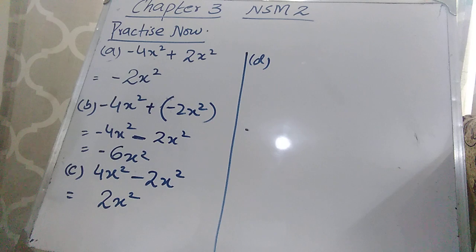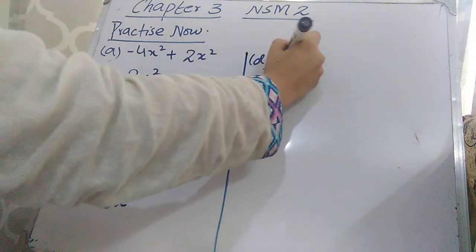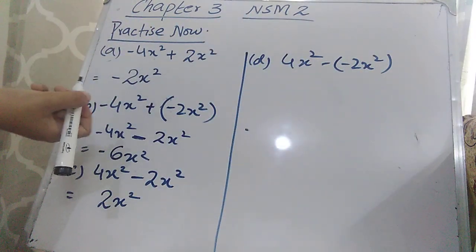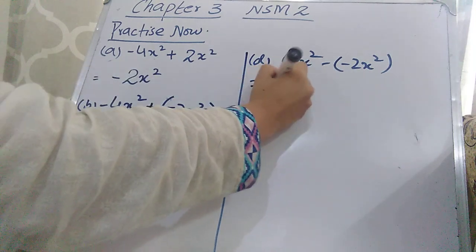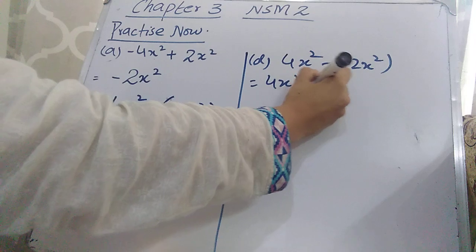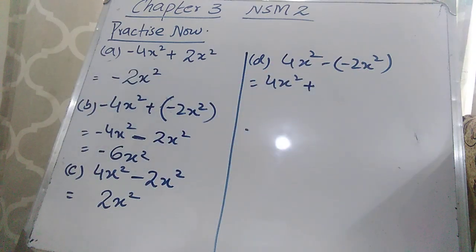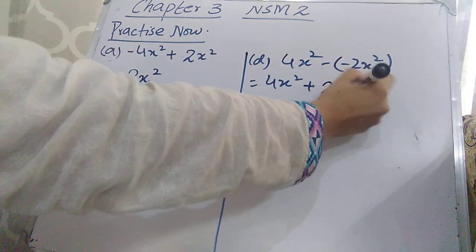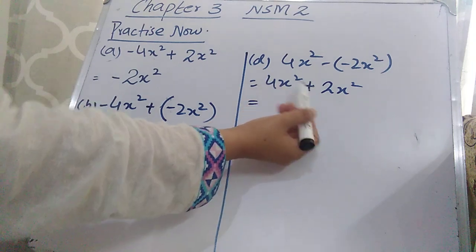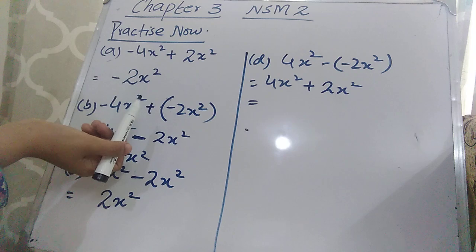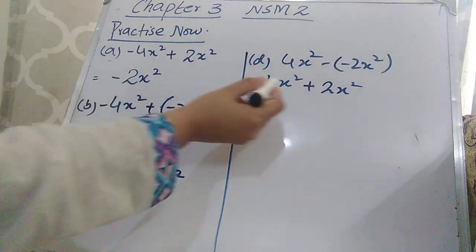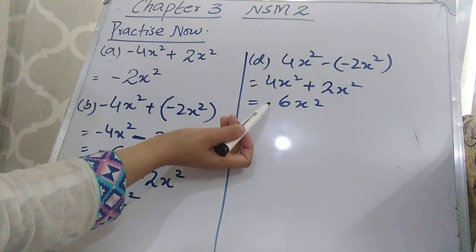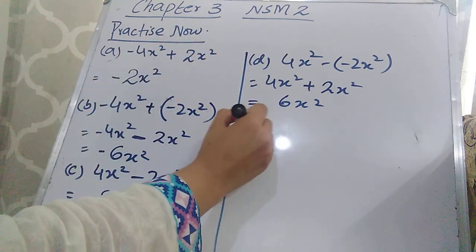For part (d): 4x² − (−2x²). Two signs appear together — minus × minus = plus — so rewrite as 4x² + 2x². Both terms now carry a plus sign, so the operation is addition: 4 + 2 = 6. The bigger number is 4 with a plus sign, so no need to write the plus, giving the answer 6x².